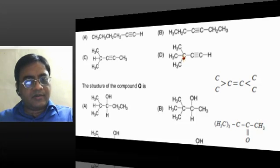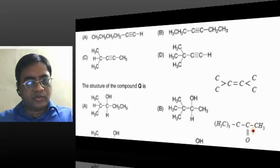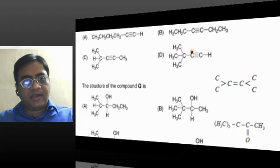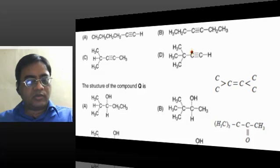This alkyne would give us this ketone. Because hydrogen will go here to the richer side, OH will go here, and then there will be enol-keto tautomerism.